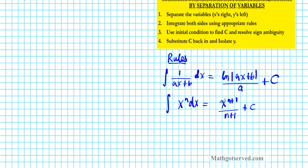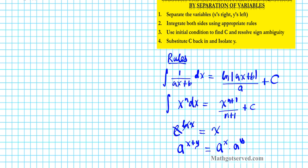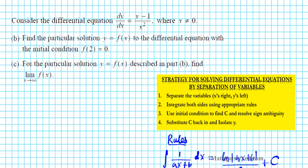Also some properties of logarithms and exponents. If you have E to the natural logarithm of X, that simply becomes X because the E and the LN cancel out. And in properties of exponents, if you have A to the X plus Y, using the reverse of the product of powers property, this can be written as A to the X times A to the Y. We're going to be making use of all these when solving this differential equation.